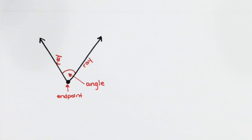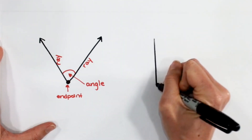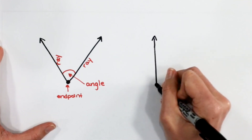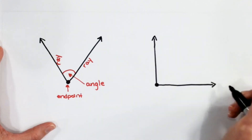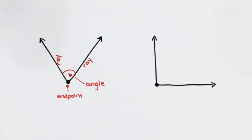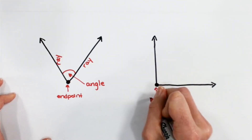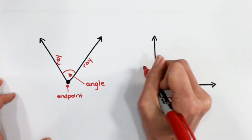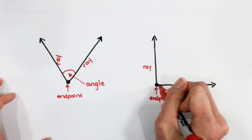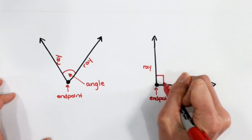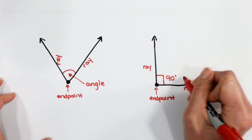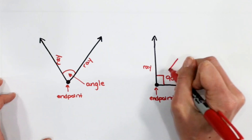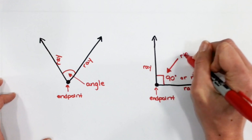Now, an angle might look another way. Let's draw another ray. So this line is going on in this direction, its endpoint is here. Another ray is going on in this direction. So here is the shared endpoint. Let's label this my ray, and then I have another ray — they share right here. Now this angle is actually 90 degrees, or we can call that a right angle. So this here is a right angle.